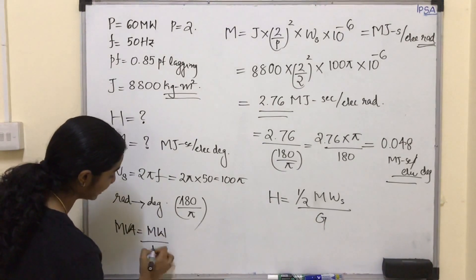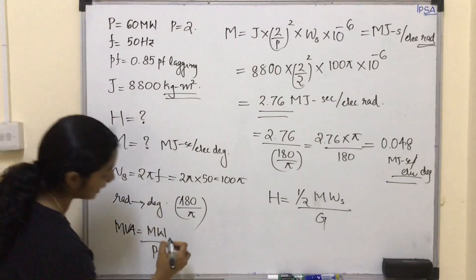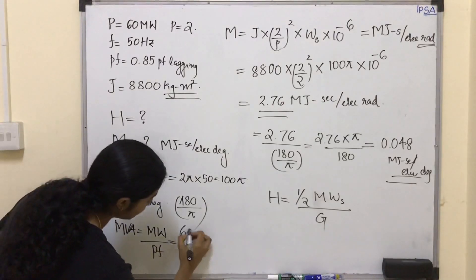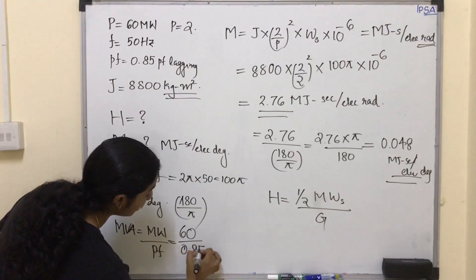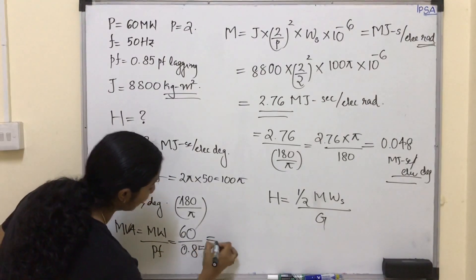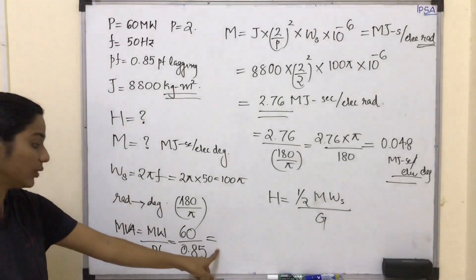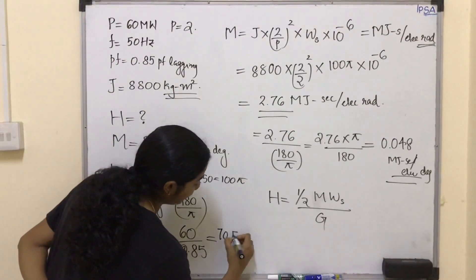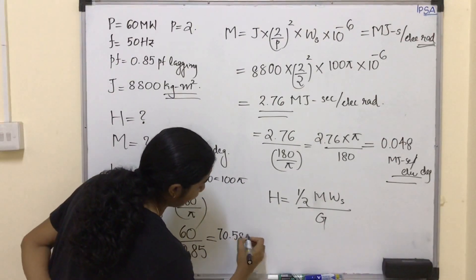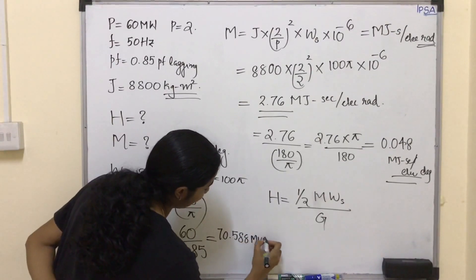First we calculate G: G equals megawatt rating divided by power factor, so 60 divided by 0.85, which equals 70.588 MVA.